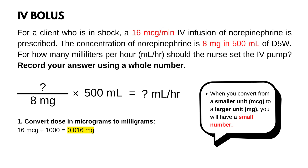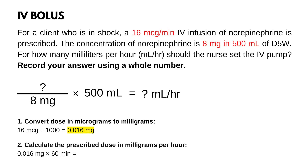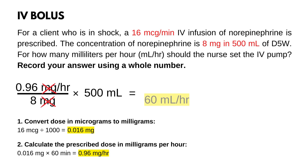Now, calculate the prescribed dose in mg per hour: 0.016 mg times 60 minutes, because there are 60 minutes in one hour. The answer is 0.96 mg per hour. Now that the conversions are done, plug in 0.96 mg per hour into our formula and calculate: 0.96 mg per hour divided by 8 mg times 500 mL. Milligrams cancel out and the answer is 60 mL per hour.